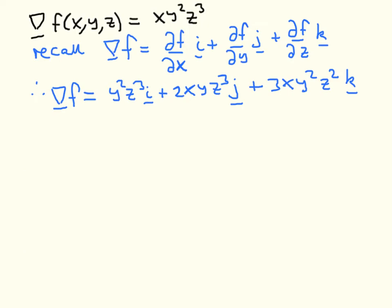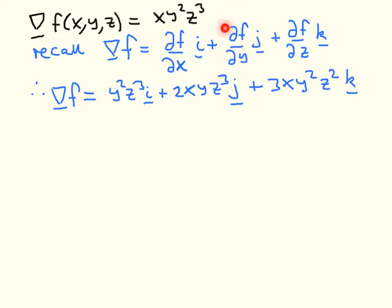The first exercise is to calculate the gradient of this scalar field. We recall the definition of the gradient — we apply this vector operator to the scalar. The gradient is in the I direction: we differentiate our field with respect to X; in the J direction, we differentiate with respect to Y; and in the K direction, we differentiate with respect to Z.